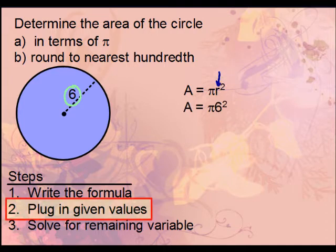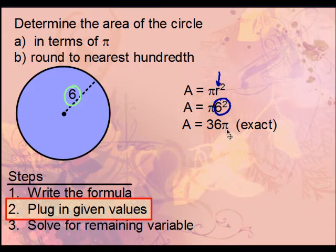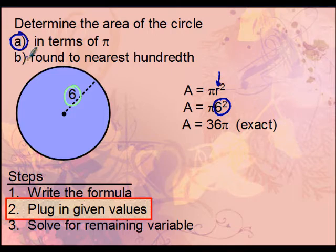Now let's do the arithmetic. 6 squared is 36, so that gives us 36π. We typically write the number in front of pi. This is the exact answer, satisfying part a.